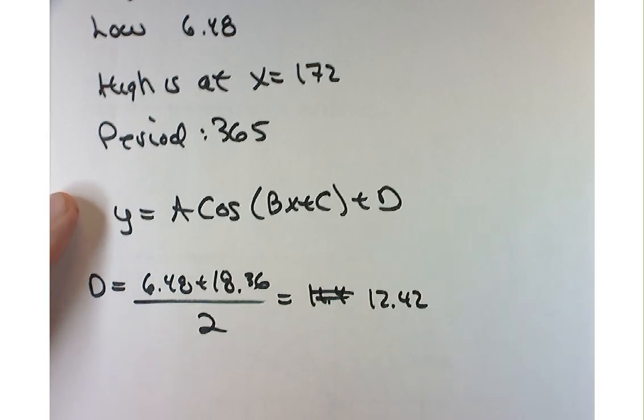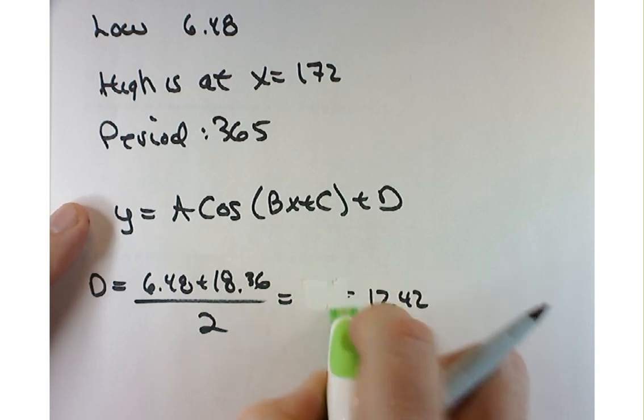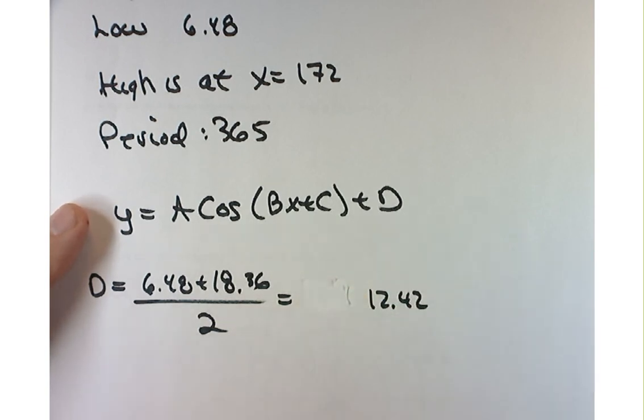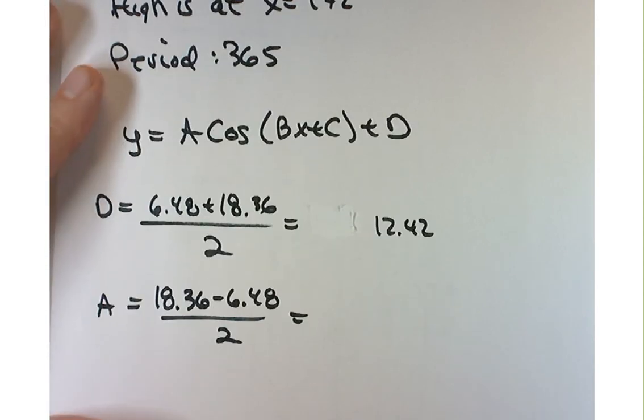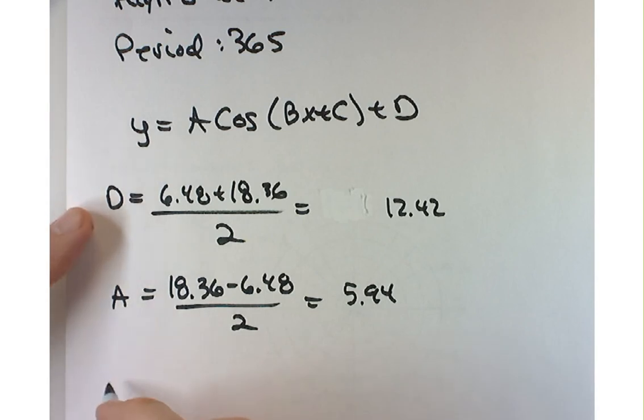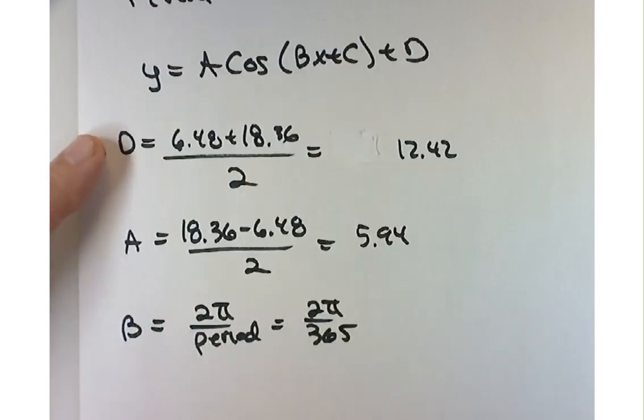How are we going to find a, the amplitude? Yeah, subtract the 2. So 18.36 minus 6.48 divided by 2. It should be a little bit less than 6. 5.94. Looking good. Let's next figure out what b is. b equals 2 pi divided by the period, which is 2 pi divided by 365. And we'll leave it like that, just 2 pi over 365.